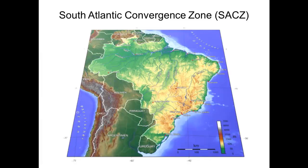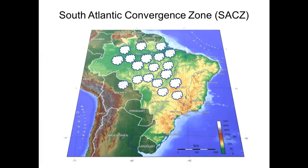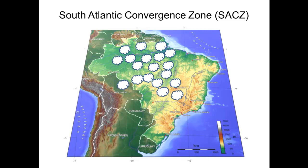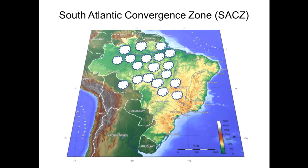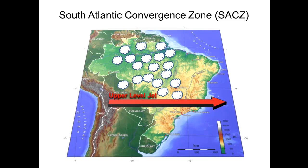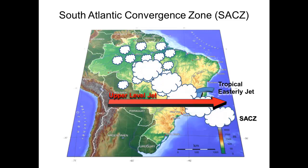I'll start by introducing the South Atlantic Convergence Zone. So during summer, due to some convergence in the atmospheric circulation, we see the presence of this band of cloudiness and heavy rainfall, which we call the South Atlantic Convergence Zone. It impacts human health, hydropower generation, and even global food security.